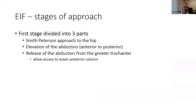I like to separate the first stage into three parts: the Smith-Peterson approach to the anterior aspect of the hip, followed by elevation of the abductors, and then release of the abductors from the greater trochanter. This allows you access to the posterior column.